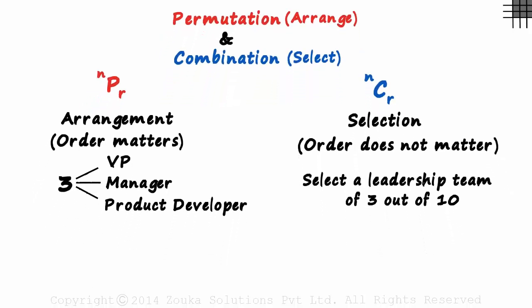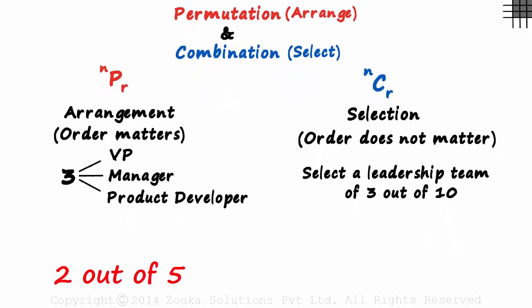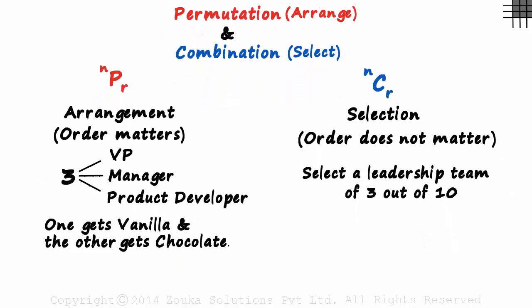Take another example. Say two out of five people get ice cream. One gets vanilla and the other gets chocolate. This is a case of permutation as each of the two people selected may get either vanilla or chocolate flavored ice cream.